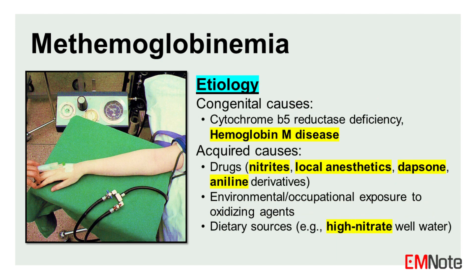Etiology: Methemoglobin can be classified as congenital or acquired. Congenital methemoglobinemia includes cytochrome B5 reductase deficiency and hemoglobin M disease. Hemoglobin M is a rare genetic variant of hemoglobin.